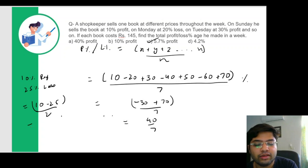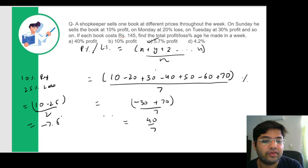So you can simply do 10 minus 25 upon 2. So this comes out to be 15 by 2, 7.5 percent. So this would mean a 7.5 percent loss. So such questions can be solved very easily with this shortcut method. This immensely reduces the amount of calculations and the time that you spend on such questions.